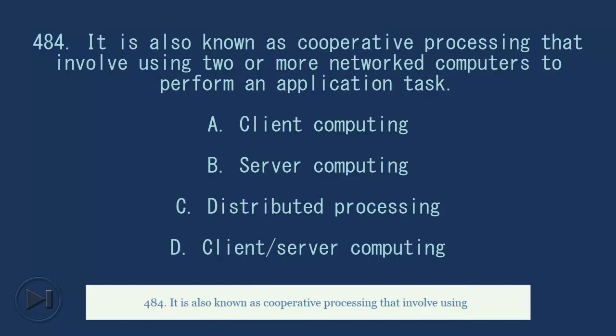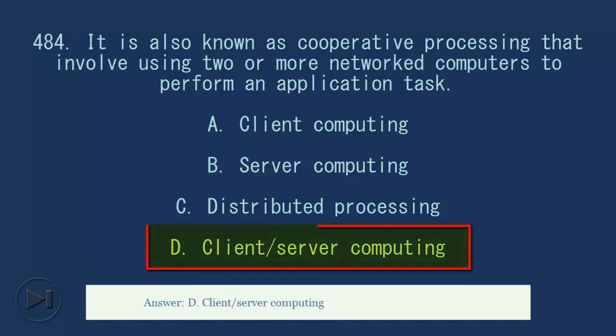484. It is also known as cooperative processing that involve using two or more networked computers to perform an application task. A. Client computing. B. Server computing. C. Distributed processing. D. Client slash server computing. Answer, D. Client slash server computing.